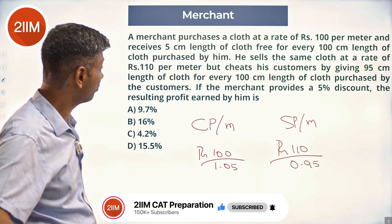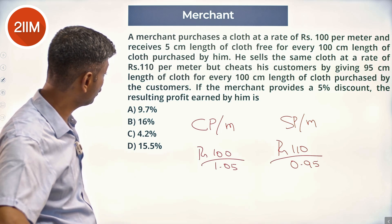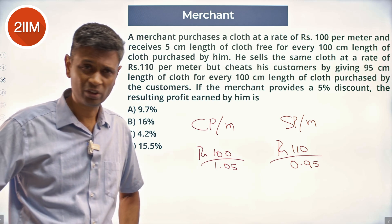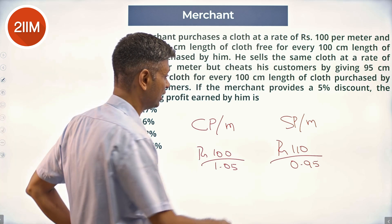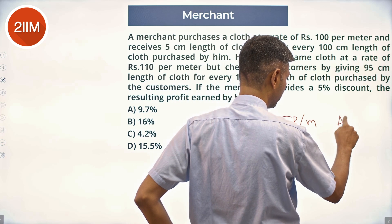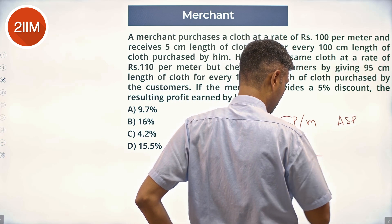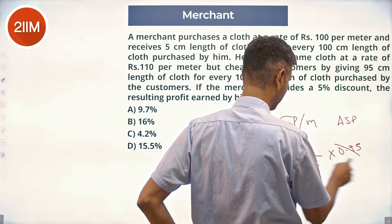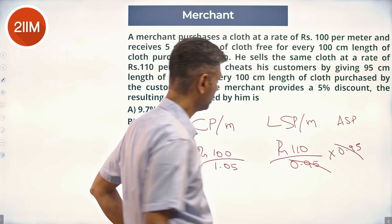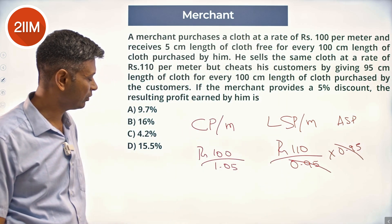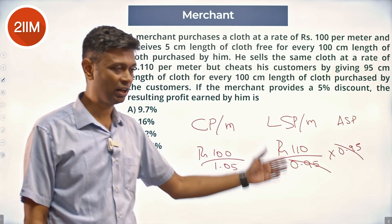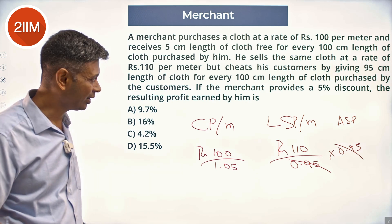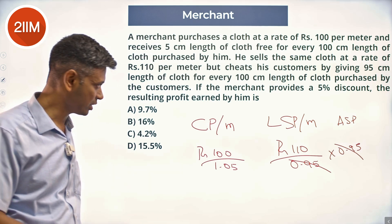If the merchant provides a five percent discount, that gives a five percent discount on the listed selling price. The actual selling price is the listed price into point nine five — which is nice because this simplifies. So profit is selling price by cost price into hundred.